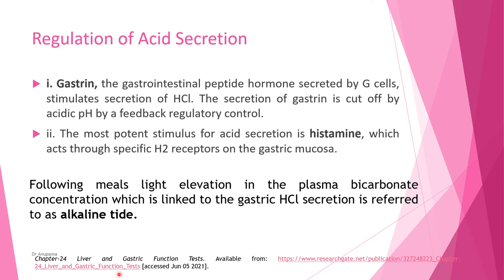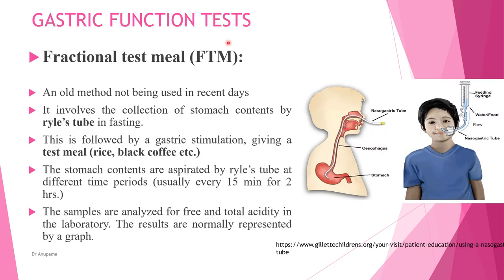Regarding regulation of acid secretion: gastrin, the gastrointestinal peptide hormone, is secreted by the G cells and stimulates the secretion of HCl. Gastrin secretion is cut off by acidic pH via feedback regulation. The most potent stimulus for acid secretion is histamine, which acts through a specific H2 receptor in the gastric mucosa. Following meals, a slight elevation in plasma bicarbonate concentration is linked to gastric HCl secretion — this is referred to as alkaline tide.